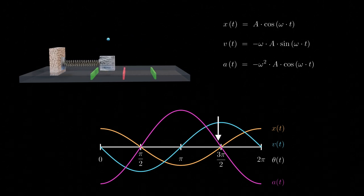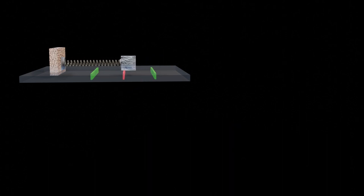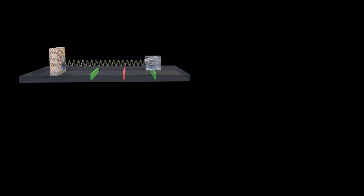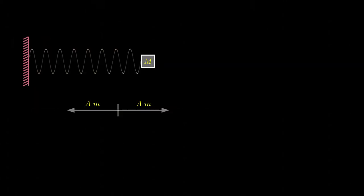Now that we have grasped the concepts of oscillation, let's examine specific instances of simple harmonic motion and determine the angular frequency for each case, starting with the spring-mass system. The animation portrays a spring connected to an object with a mass of m kilograms, and the spring constant is denoted as k in newtons per meter. The object is pulled to the right by a distance of A meters and released, establishing the maximum displacement from the equilibrium position. At any given time t, the mass is positioned at a distance x(t) meters from the equilibrium point.